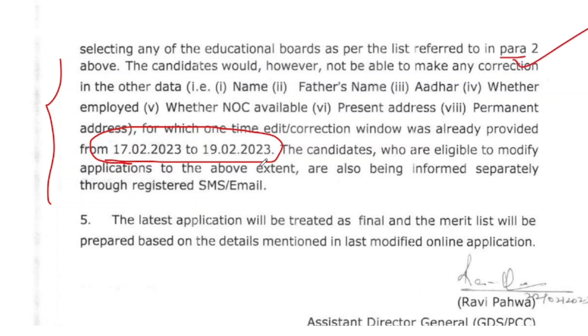Number 1 — you need to know the name. The border, the employee, the NOC, the present edit, and the permanent status option are the fields you can edit.